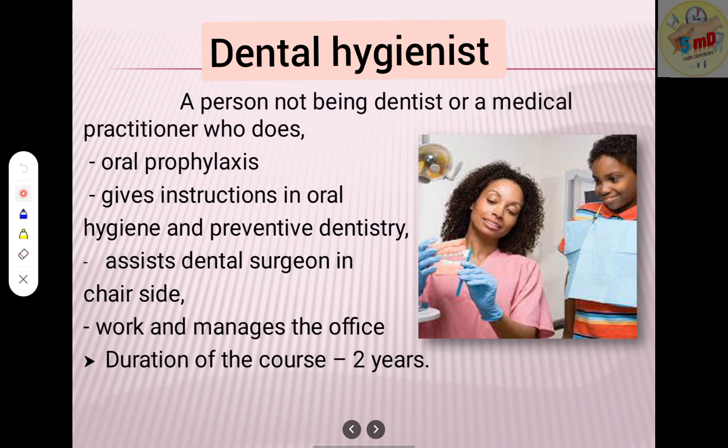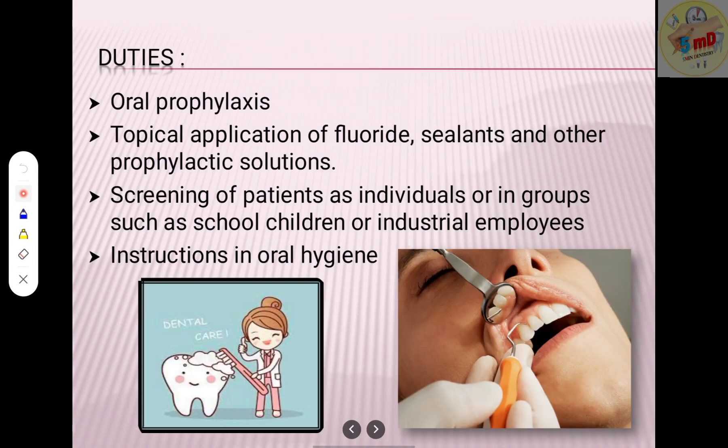The dental hygienist is not a dentist or medical practitioner, but performs oral prophylaxis, gives instructions in oral hygiene and preventive dentistry, and assists the dental surgeon at the chair side. He works and manages the dental office. The duration of the course is two years. His duties include oral prophylaxis, topical application of fluoride, sealants, and other prophylactic solutions, and screening of patients as individuals or in groups such as school children or industrial employees.